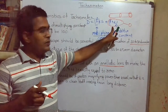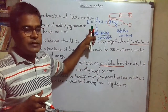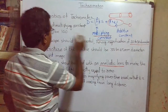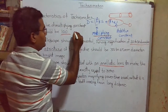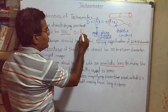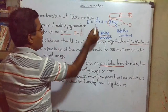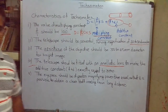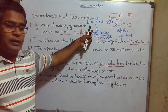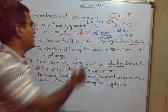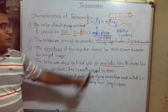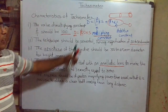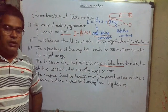If the additive constant f + d is zero, then we can calculate the distance d directly using f/i. Since the multiplying constant f/i is 100, our formula reduces to d = 100 × s. So by simply finding out the staff intercept s, we can find out any distance d. By introducing the analytic lens, we can make the additive constant zero and simplify the formula to d = 100 × s.